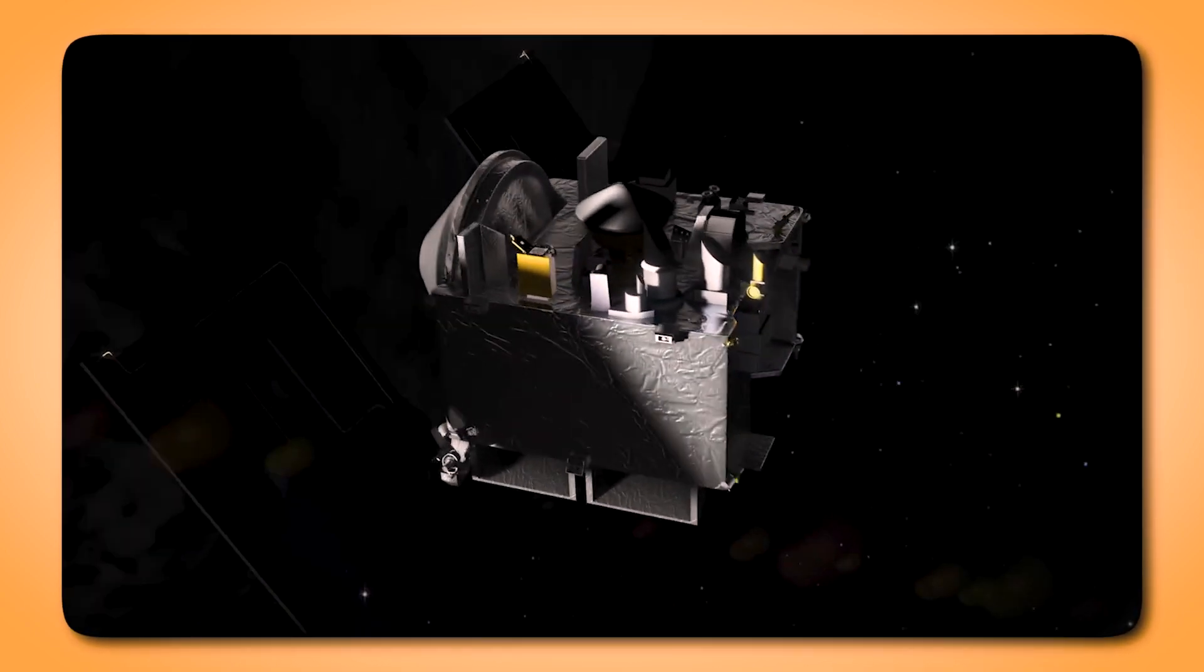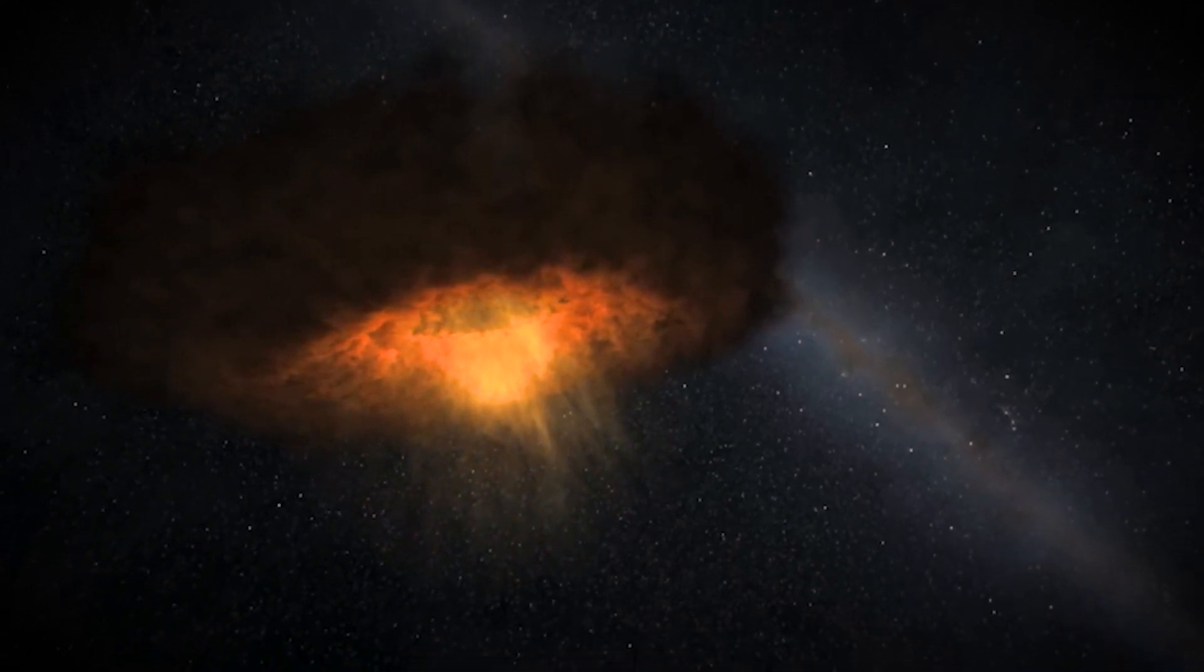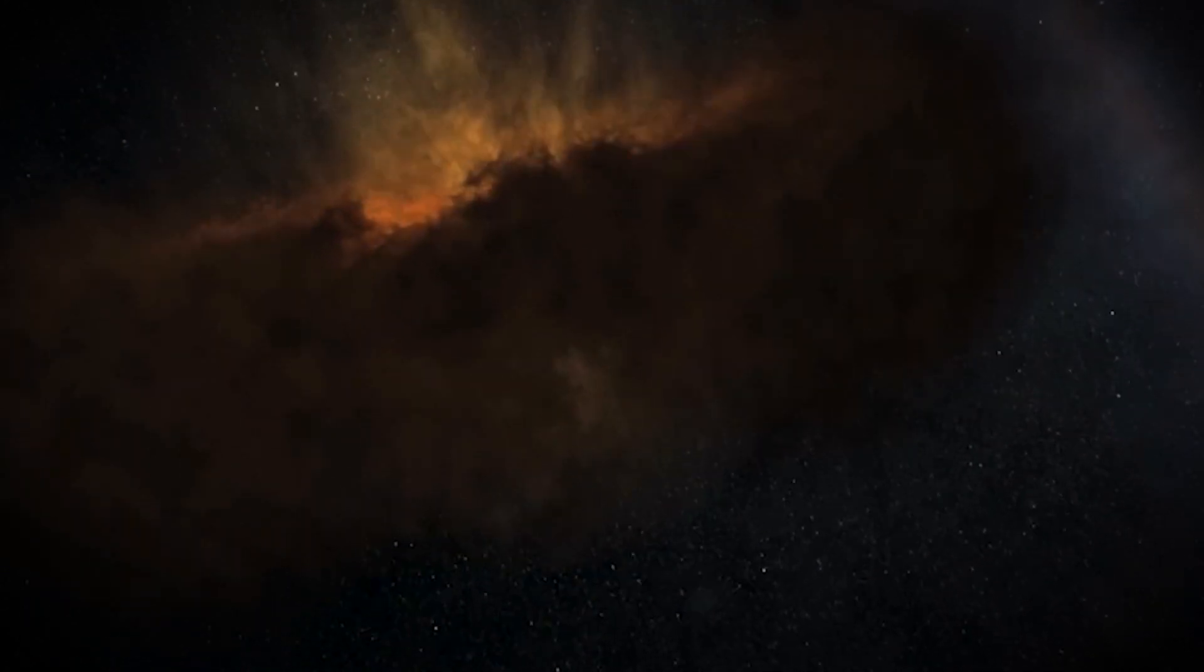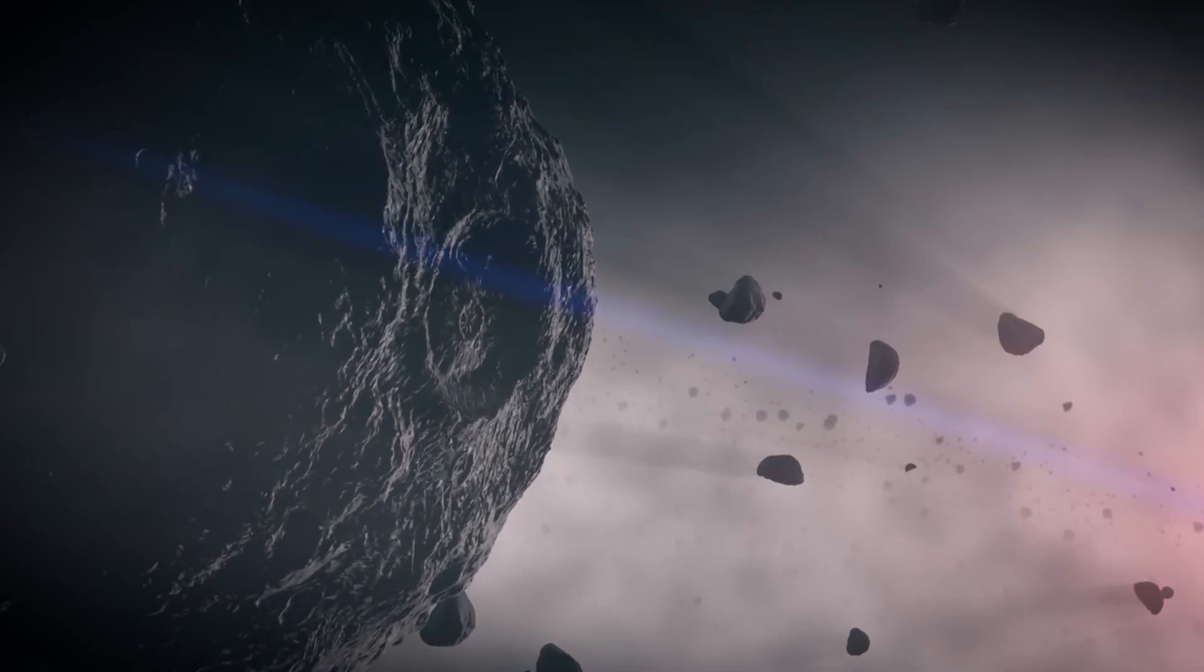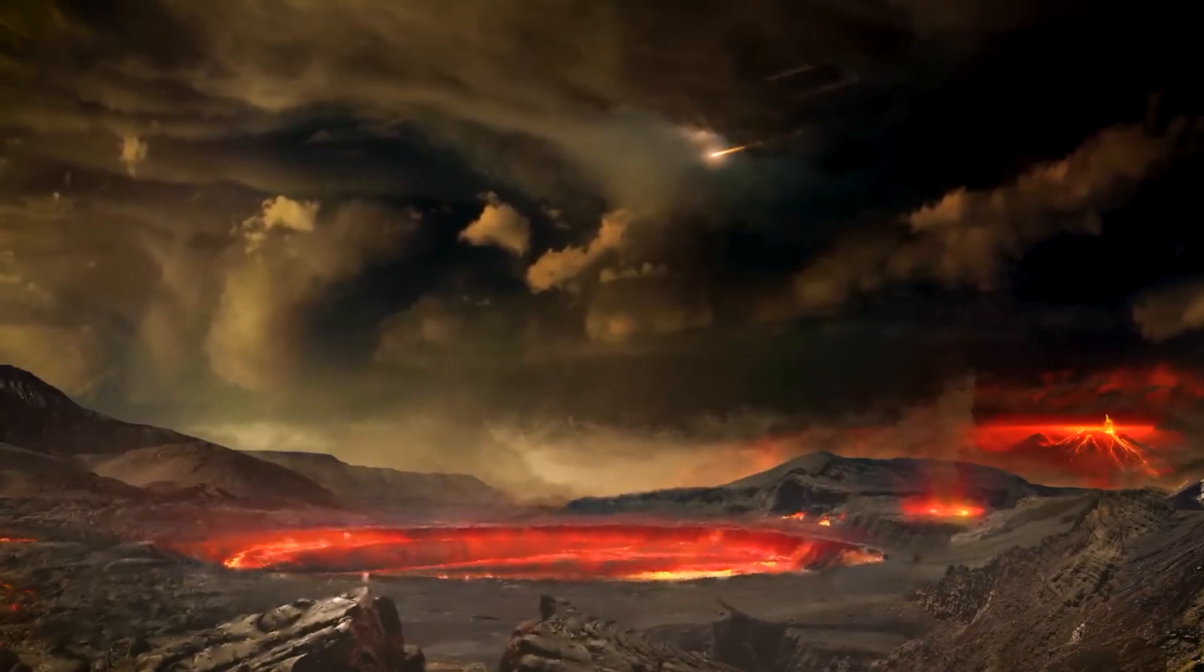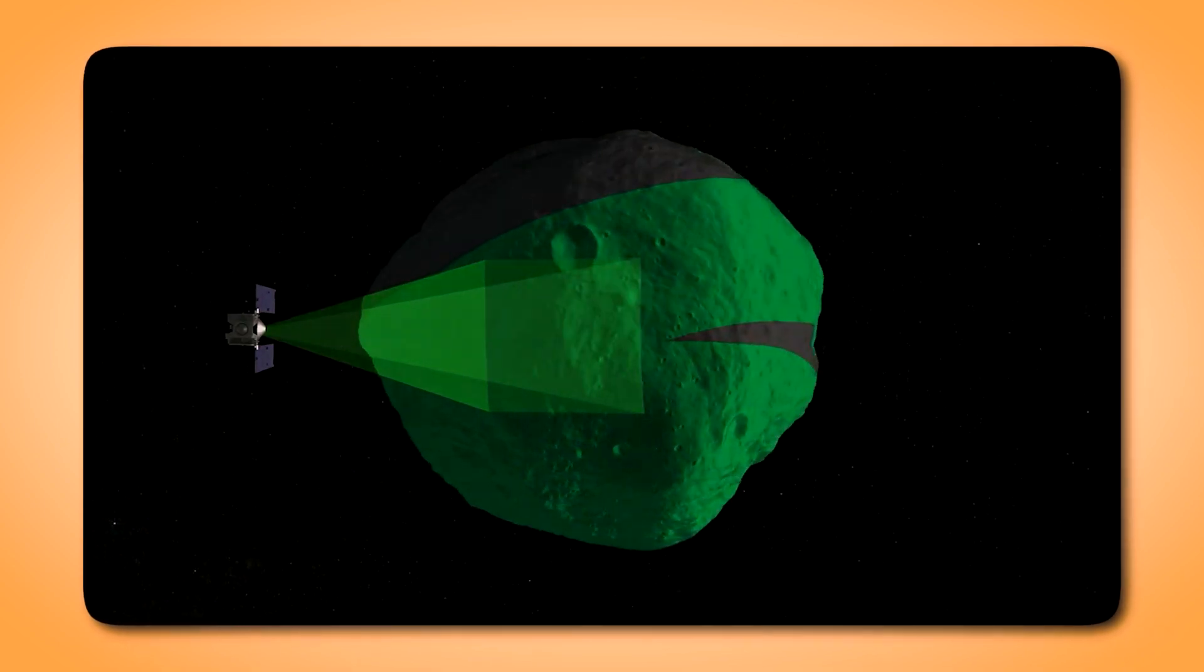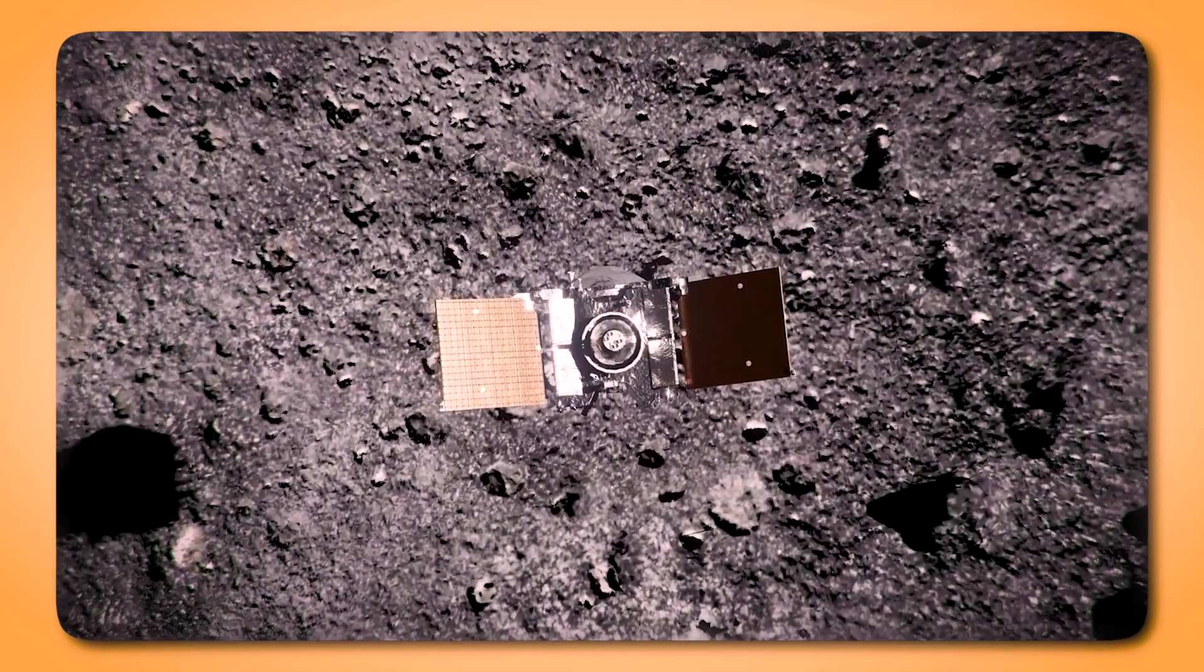As for the OSIRIS-REx spacecraft, its journey is far from over. Approximately 20 minutes after releasing the Bennu sample capsule into Earth's atmosphere, it ignited its engines to embark on a new mission. Now renamed OSIRIS-APEX, OSIRIS-Apophis Explorer, the spacecraft is headed toward a new target, the asteroid Apophis, which it will reach in 2029. During an 18-month campaign, OSIRIS-APEX will map Apophis's surface, analyze its chemical composition, and study how it changes during a close encounter with Earth. In a move reminiscent of its Bennu mission, the spacecraft will approach within 16 feet of Apophis's surface and fire its thrusters to stir up subsurface material. While it won't collect a sample, this maneuver will provide a rare glimpse into the hidden layers of another near-Earth asteroid.